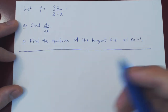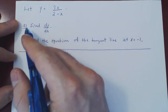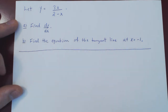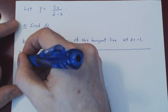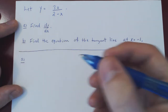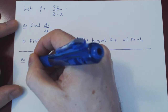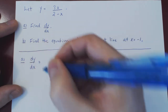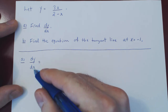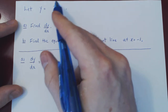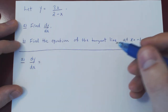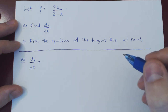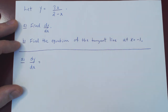Let us first find our derivative. As soon as we have the derivative, part b becomes essentially trivial. The derivative dy over dx is the slope of the tangent line at any given value of x for the function. So always remember that you find the slope of the tangent line in two steps.